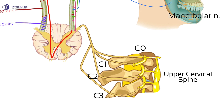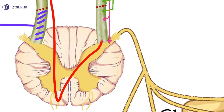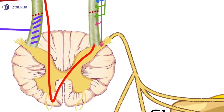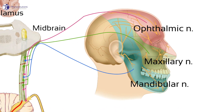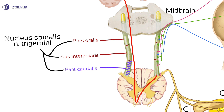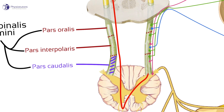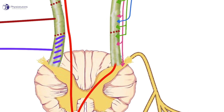The efferent innervation of those structures converges onto the second order neuron in the dorsal horn at the height of C1-C2. At the same time, our face has a very high density of efferent nociceptive innervation and receives sensory innervation from cranial nerve number 5, the trigeminal nerve. The trigeminal nerve in turn converges onto the second order neuron in the trigeminal nerve nucleus, which is the largest cranial nerve nucleus. It extends all the way from the midbrain to the pons and medulla into the spinal cord until C1-C2. So the trigeminal nerve's innervation and the innervation of deep structures of the upper cervical spine converge onto the same spinal segment.